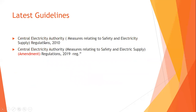The CEA has published measures relating to safety and electricity supply regulations in 2010, covering supply, installation, testing, and commissioning of all electrical areas — including standards, testing procedures, commissioning, and record maintenance. The latest amendment was published in 2019 by the Central Electricity Authority regarding measures relating to safety and electric supply.